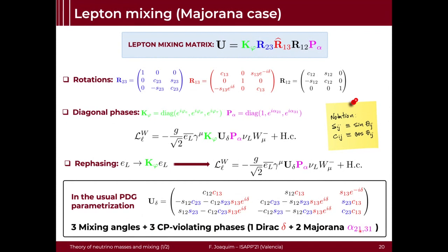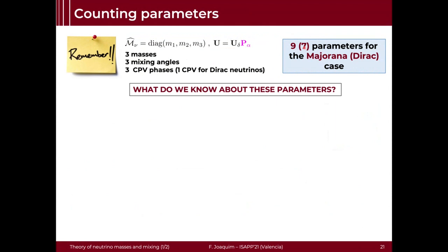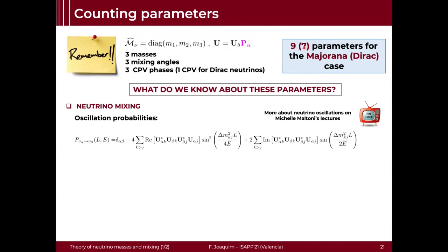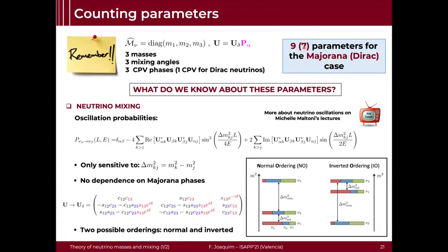How many parameters do we have? We have three mixing angles, three CP-violating phases — one Dirac and two Majorana. The Majorana phases cannot be eliminated because we are in the Majorana case; in the Dirac case they could be removed by rephasing the nu_R fields. In total: three masses, three mixing angles and three CP-violating phases for Majorana neutrinos, and seven if we were in the Dirac case because of the two extra Majorana phases. You can write down the oscillation probabilities and come to the conclusion that neutrino oscillations are only sensitive to neutrino mass squared differences — they do not depend on the Majorana phases — and there are two possible orderings: normal and inverted.